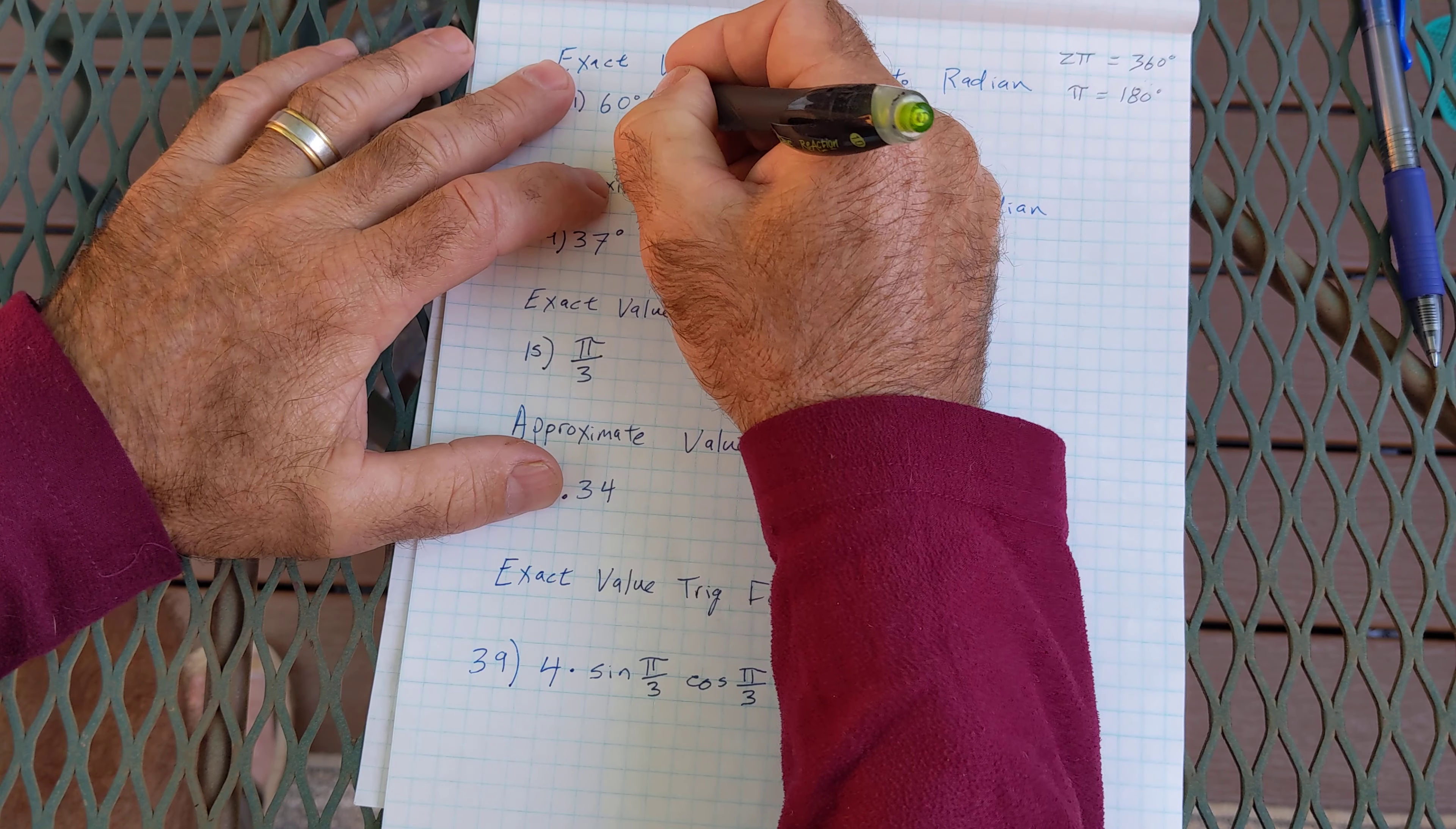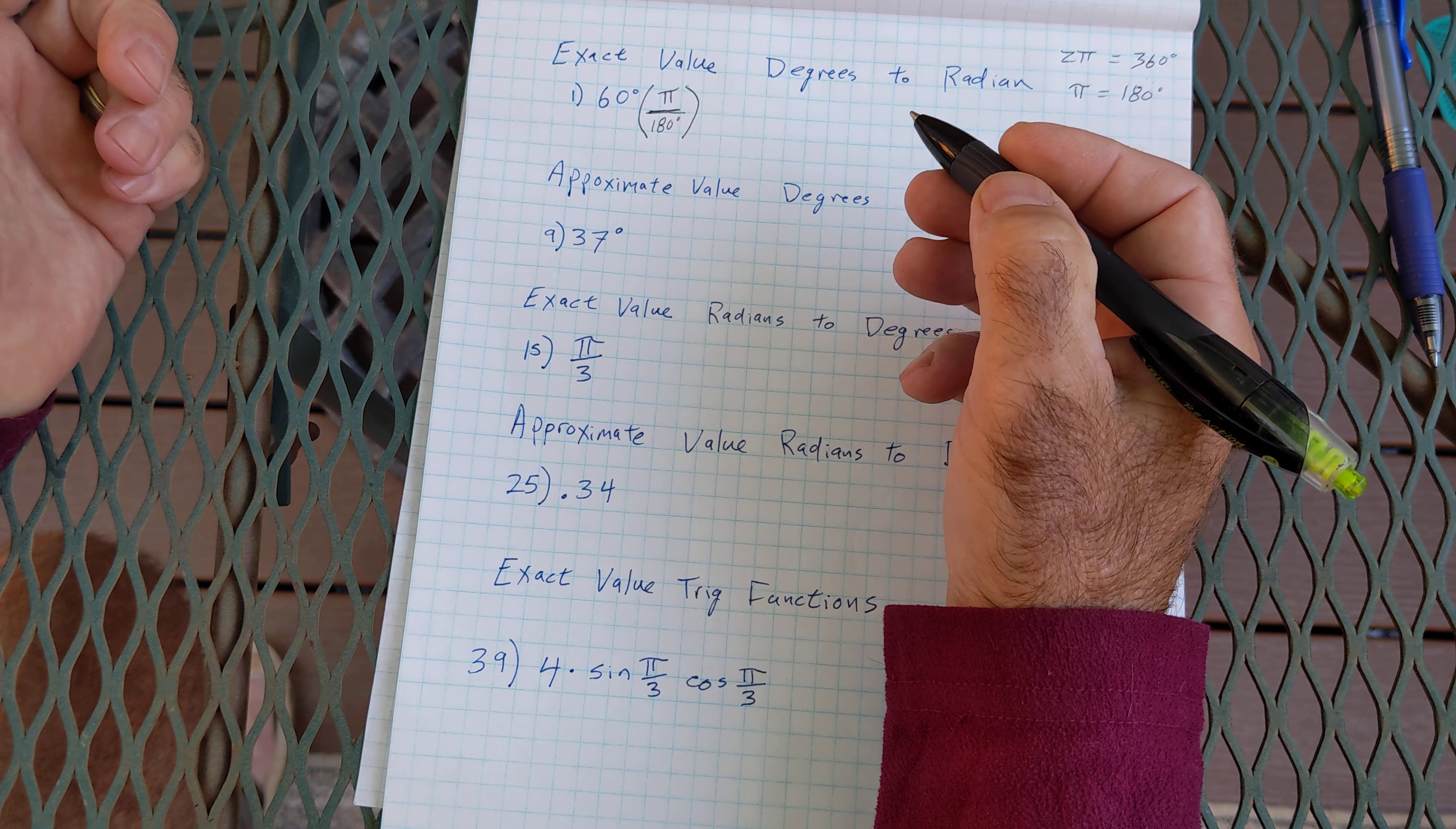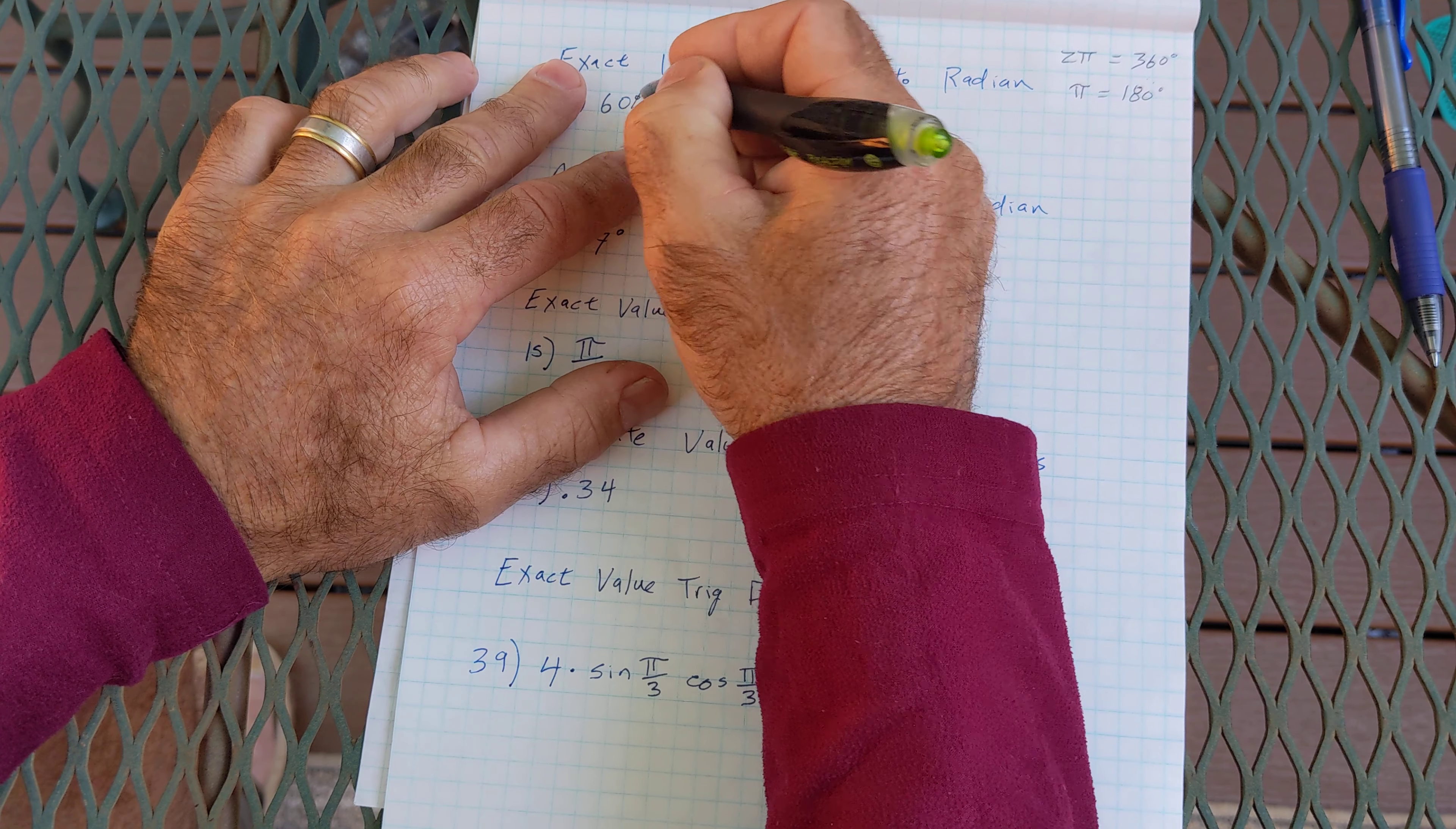So that means if I put pi over 180, I'm multiplying by 1, it doesn't affect the value. The whole reason I multiply by 1 is so these degrees cancel.